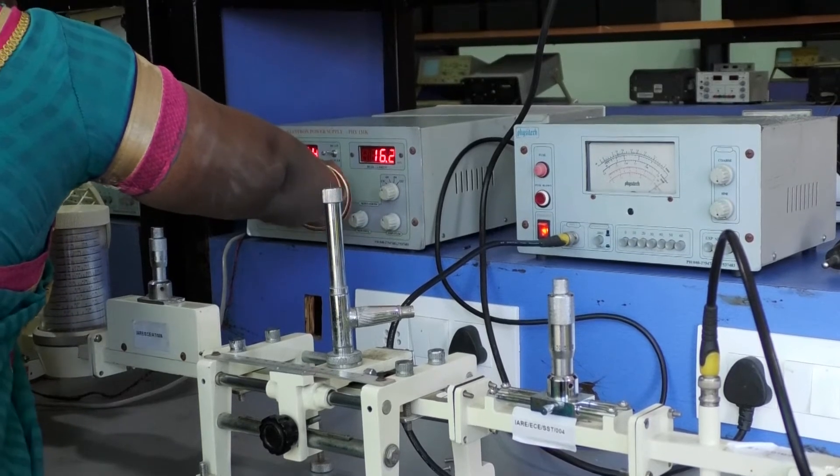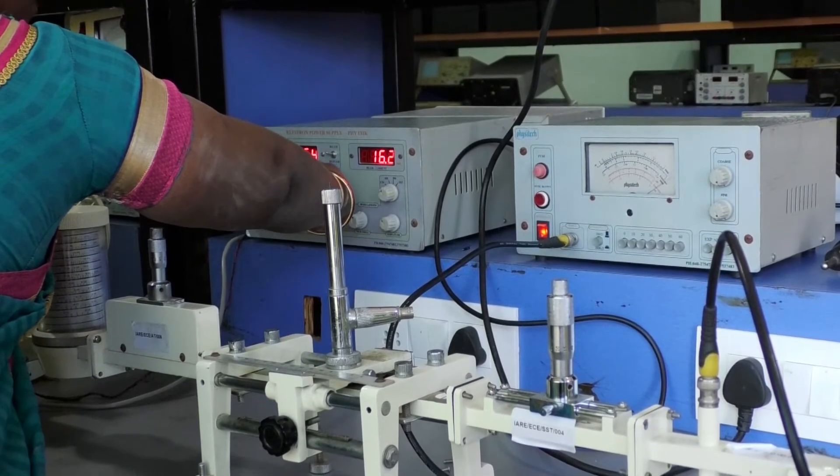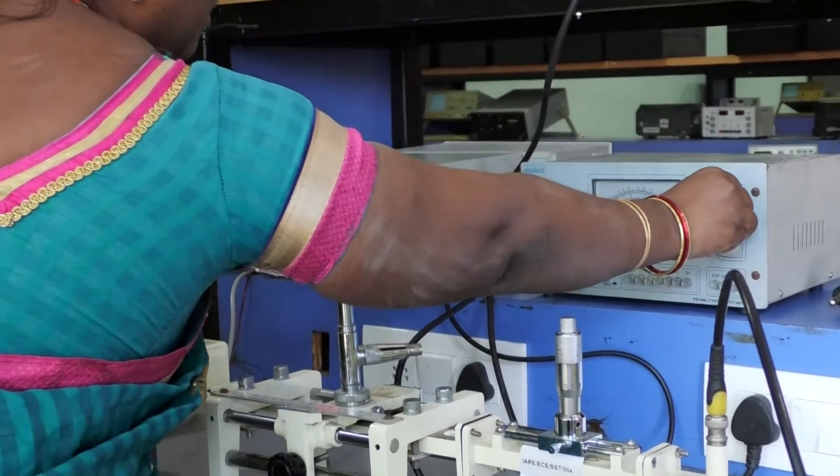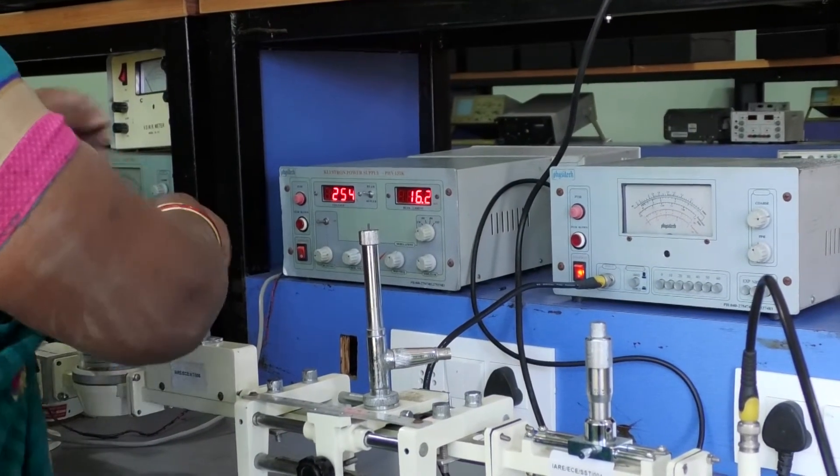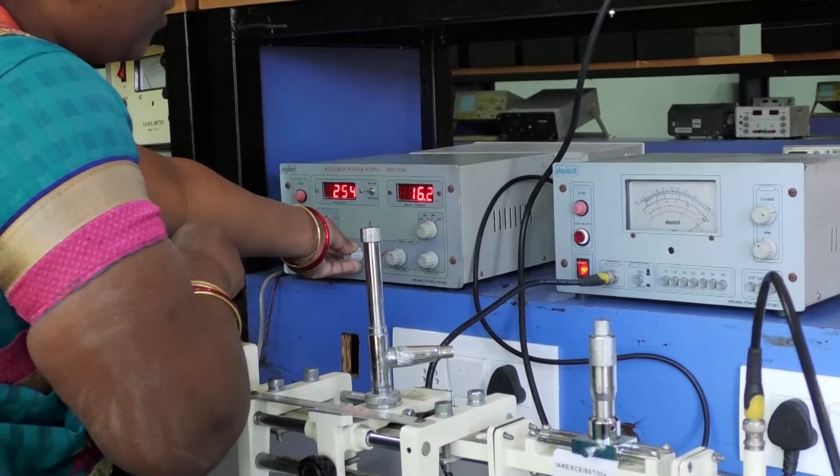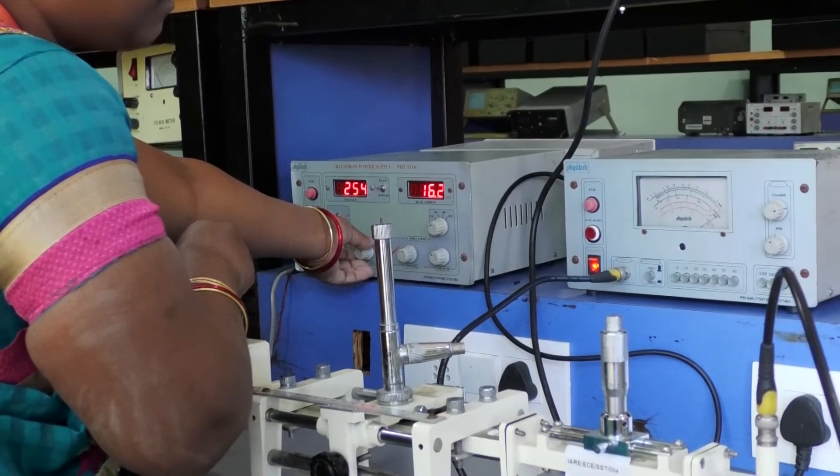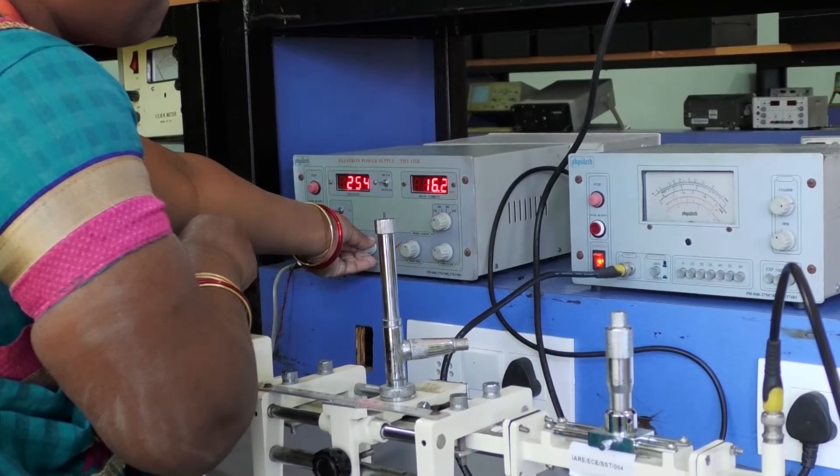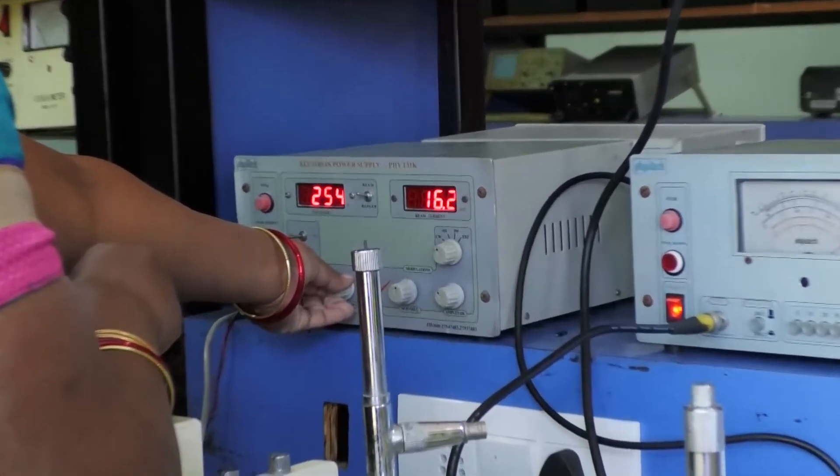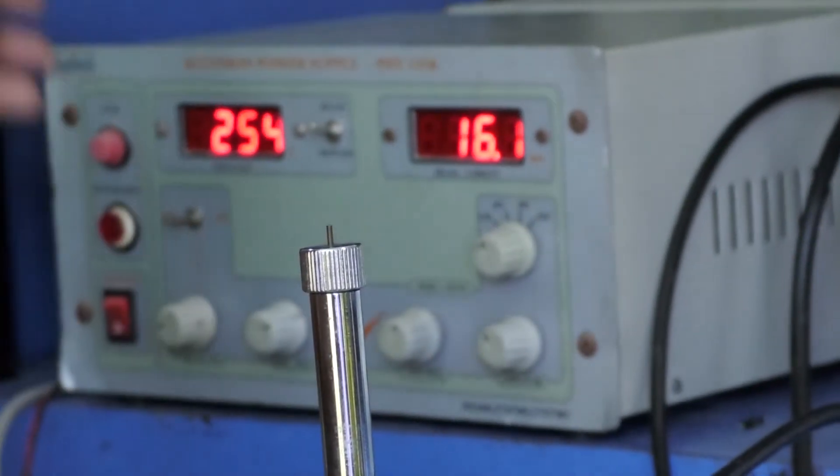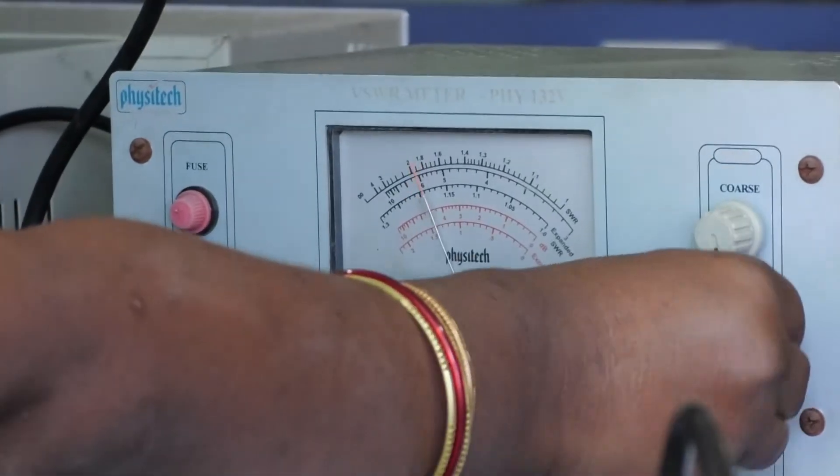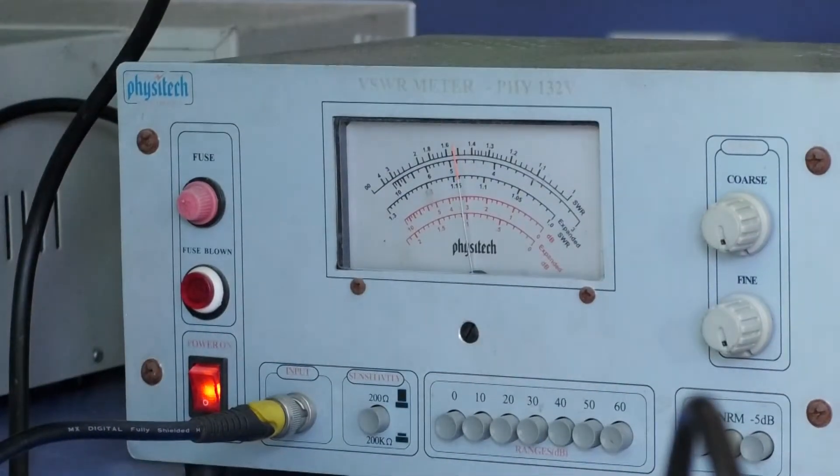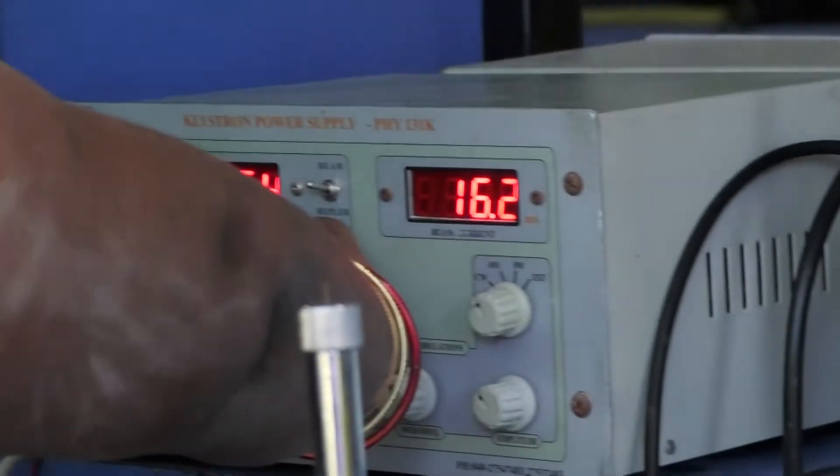After that, again change the repeller voltage to set it to 1. By varying coarse, gain, or variable attenuator position, we have to set VSWR reading as 1.